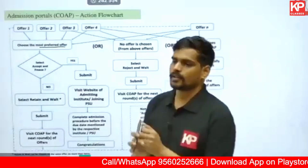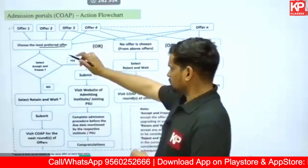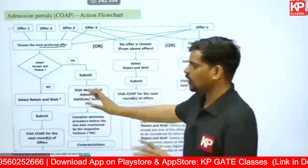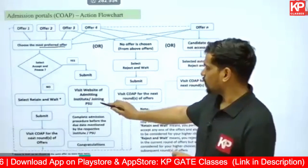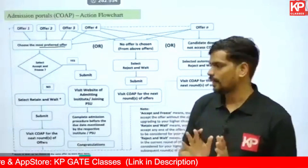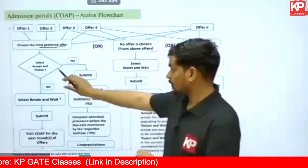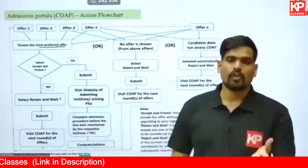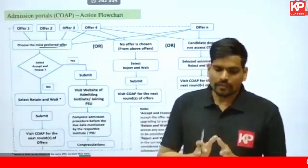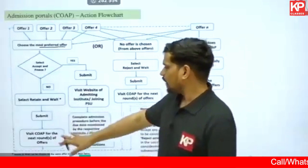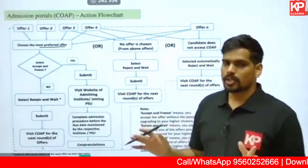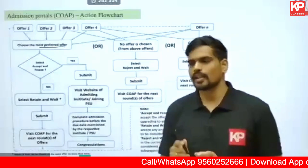Always select your most preferred option. If you select Accept and Freeze, your admission is finalized — you pay the fee to the institute and wait for classes to start, which will likely begin at the end of June or early July. If you don't choose Accept and Freeze, the alternative is Retain and Wait — you wait for further rounds hoping for a better option, but you retain your current seat as a backup. If you don't like any of the options received, you can Reject and Wait, but rejected options will not be offered to you again in the next round.